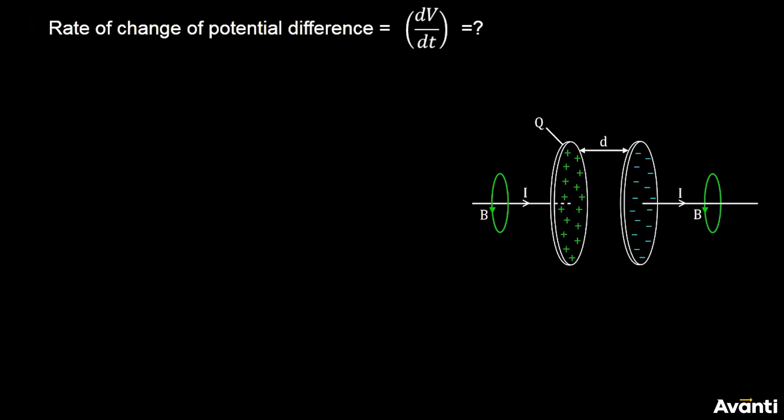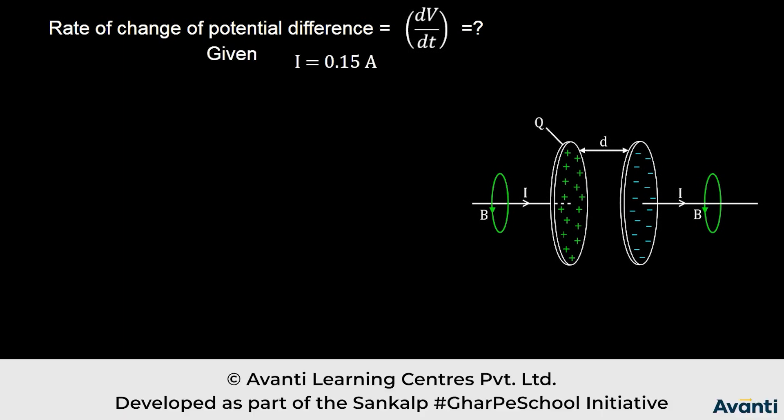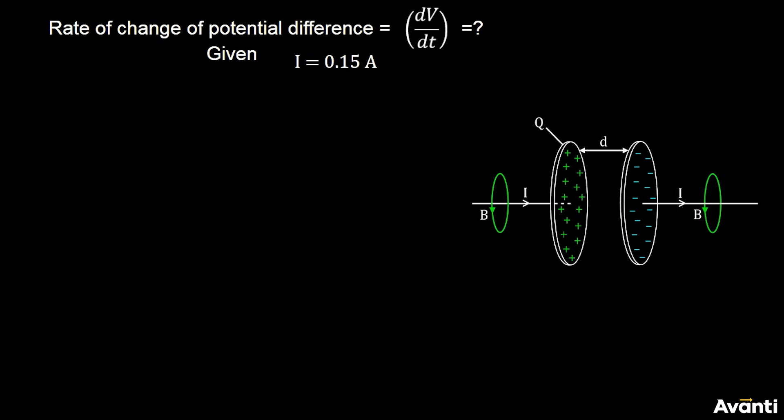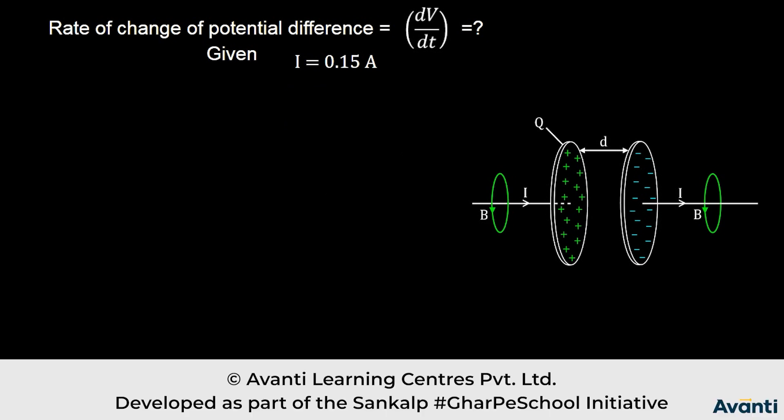The second part is dV by dt, rate of change of potential difference. This is very easy. We know current flow is 0.15 ampere. We know Q equals C into V. If I differentiate this equation, dQ by dt equals C into dV by dt. And dQ by dt is the current which we have given as 0.15 ampere. The capacitance we have just calculated, so if I add current value 0.15 ampere and the capacitance value which is 80.1 pico farad.